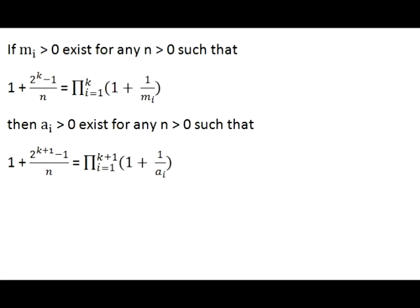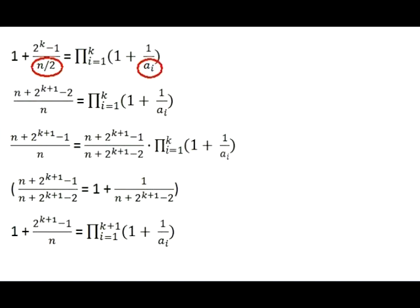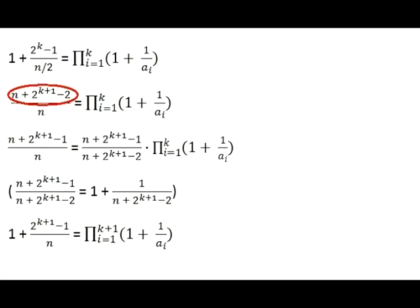Let's first assume that the number n in the target equality is even. In this case, we can use number n over 2 in the initial equality. And as we have assumed before, there exists k positive integer numbers ai that satisfy the initial equality. The resulting expression on the left side of the equality is almost exactly what we need.